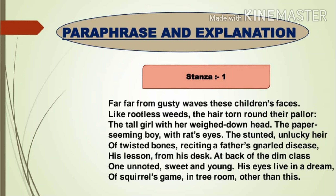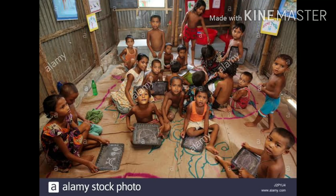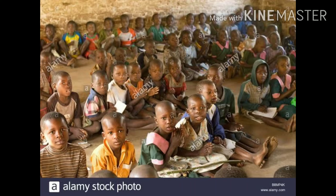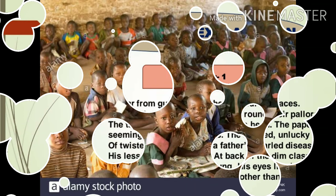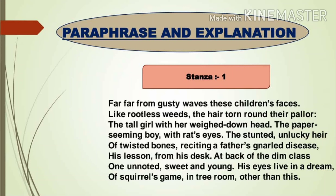To express his idea of social injustice, Spender takes the example of an elementary school in a slum. The first stanza opens: 'Far far from gusty waves these children's faces, like rootless weeds, the hair torn round their pallor.' The children are sitting in the classroom of a slum school, far away from winds and sea. Their disorderly and unkempt hair on pale faces look like rootless wild plants.